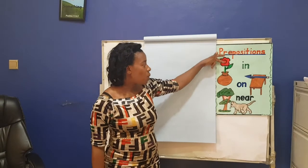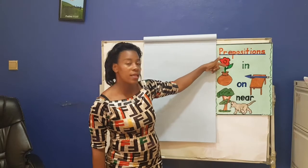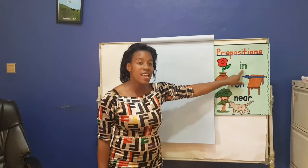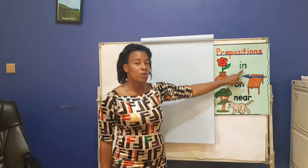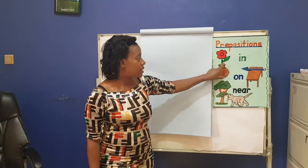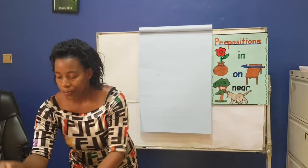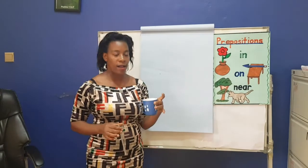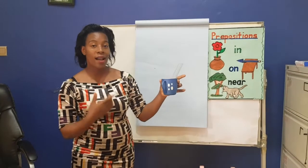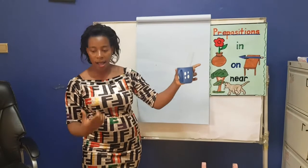Look at our flower. The flower is in the pot. Our preposition is in — together, in. The flower is in the pot. Then I have a cup. Where is the ruler? The ruler is in the cup.